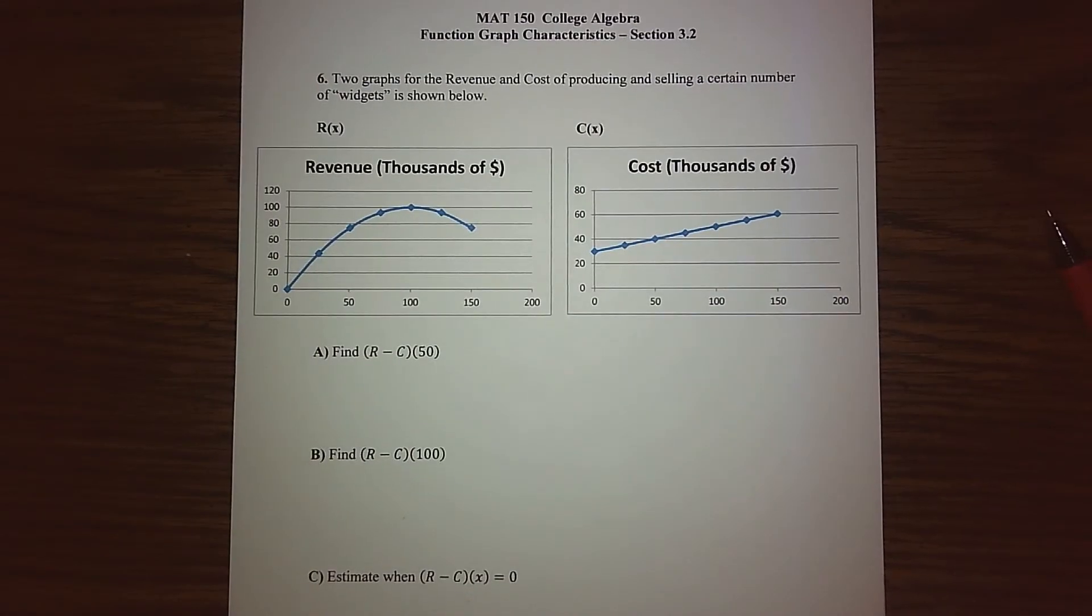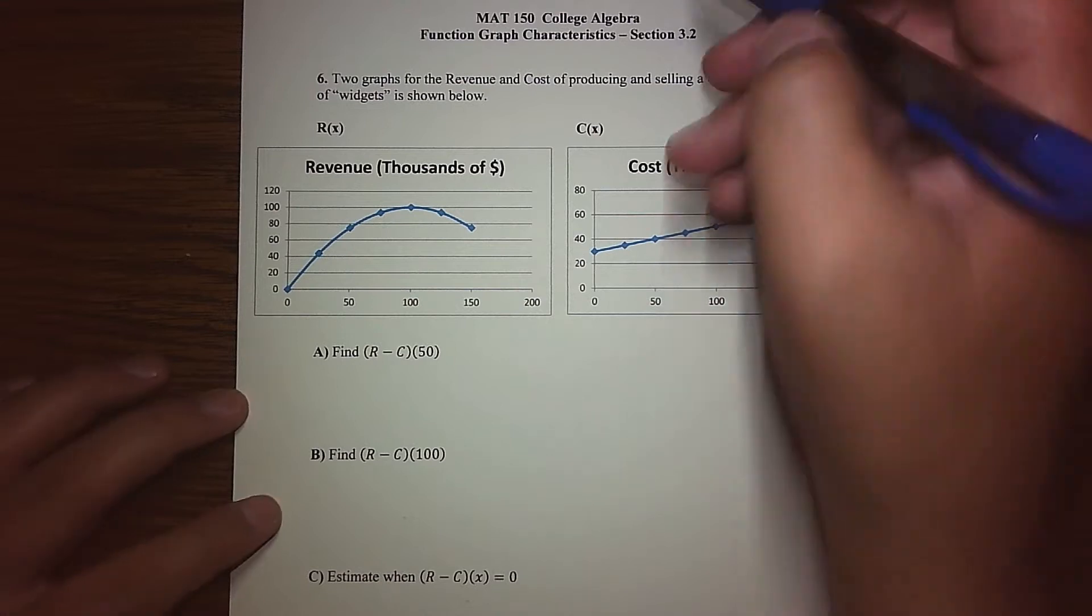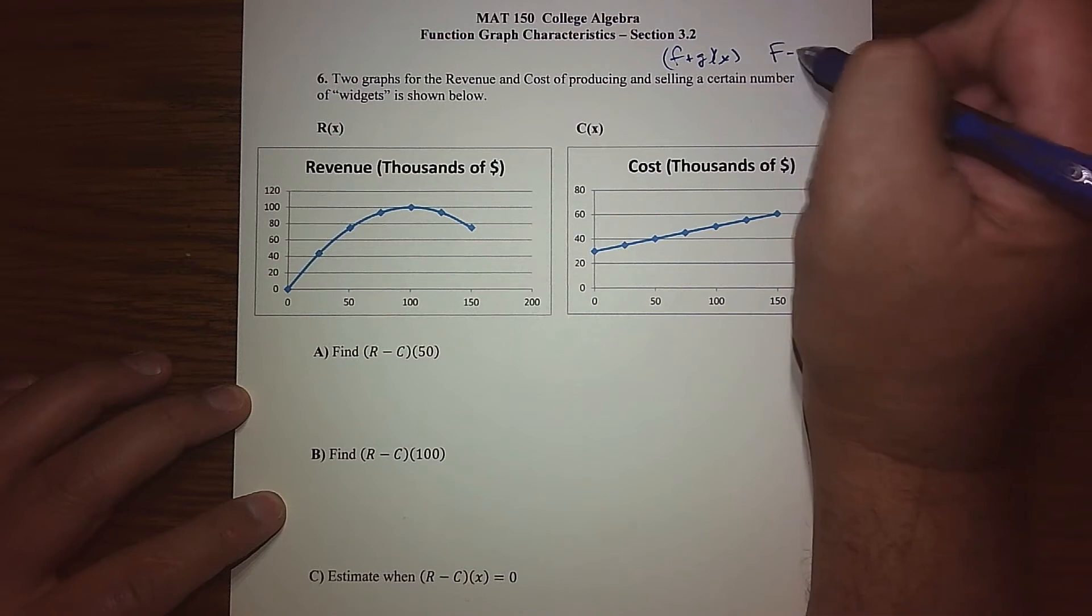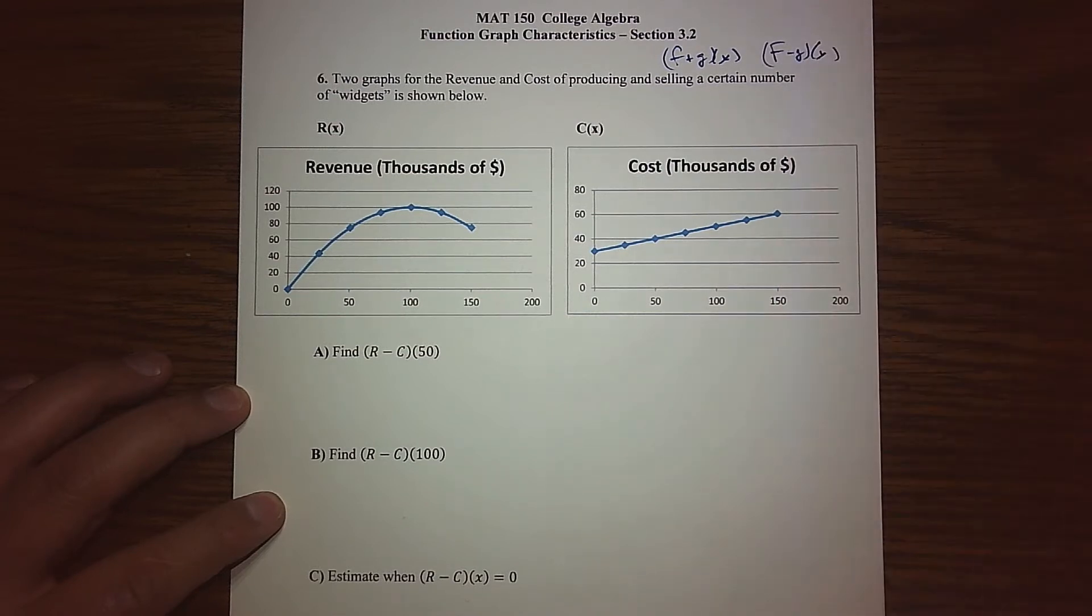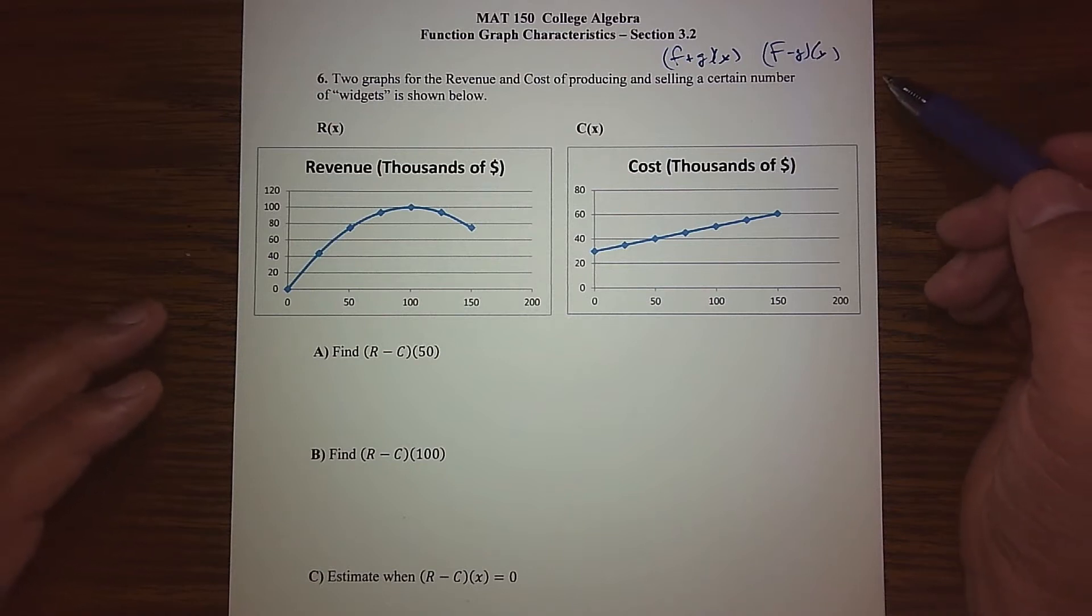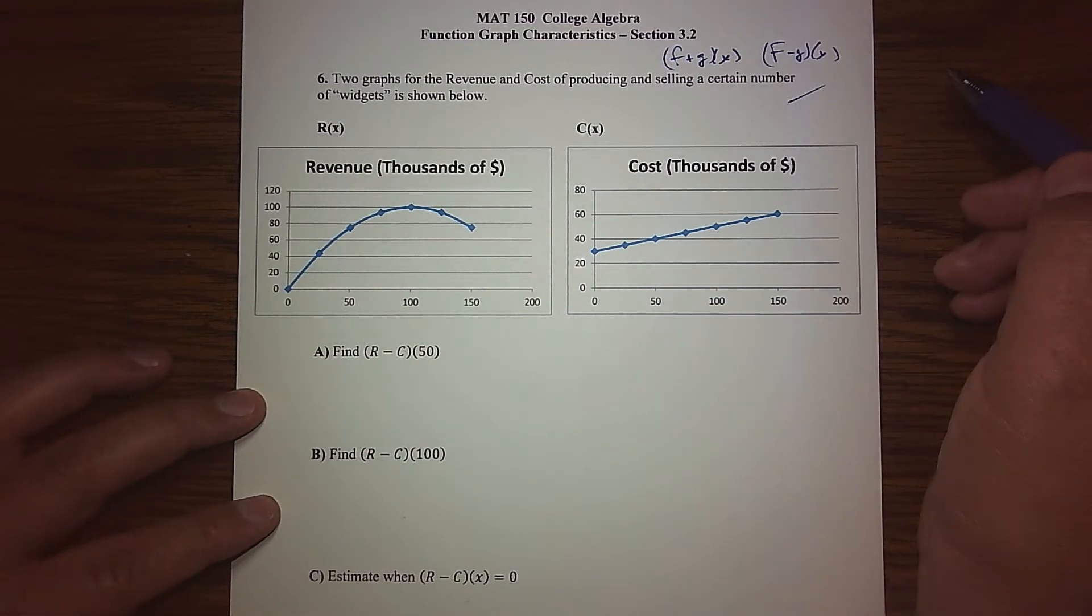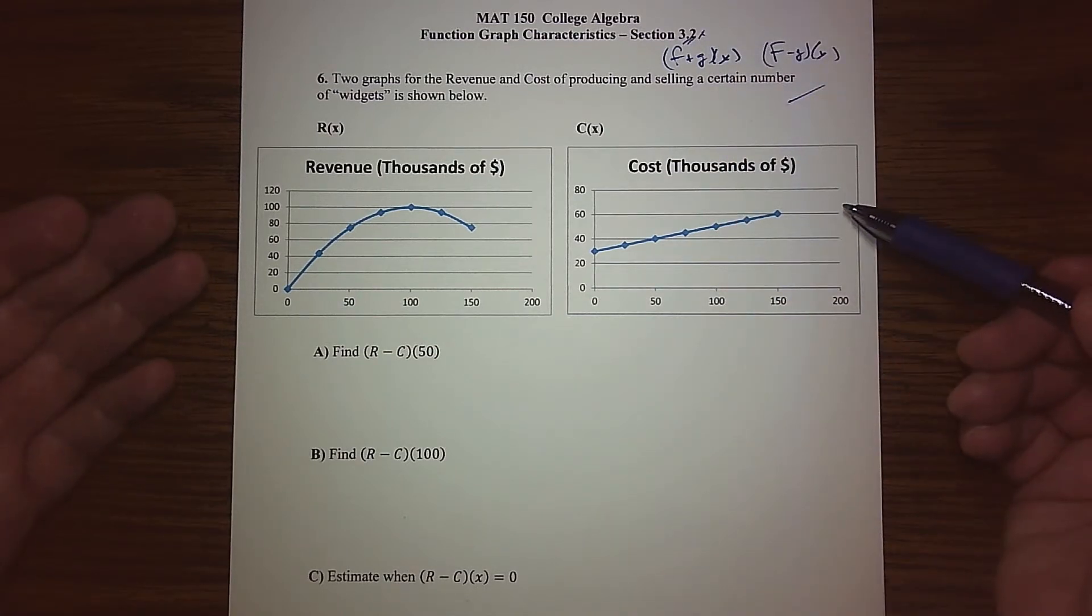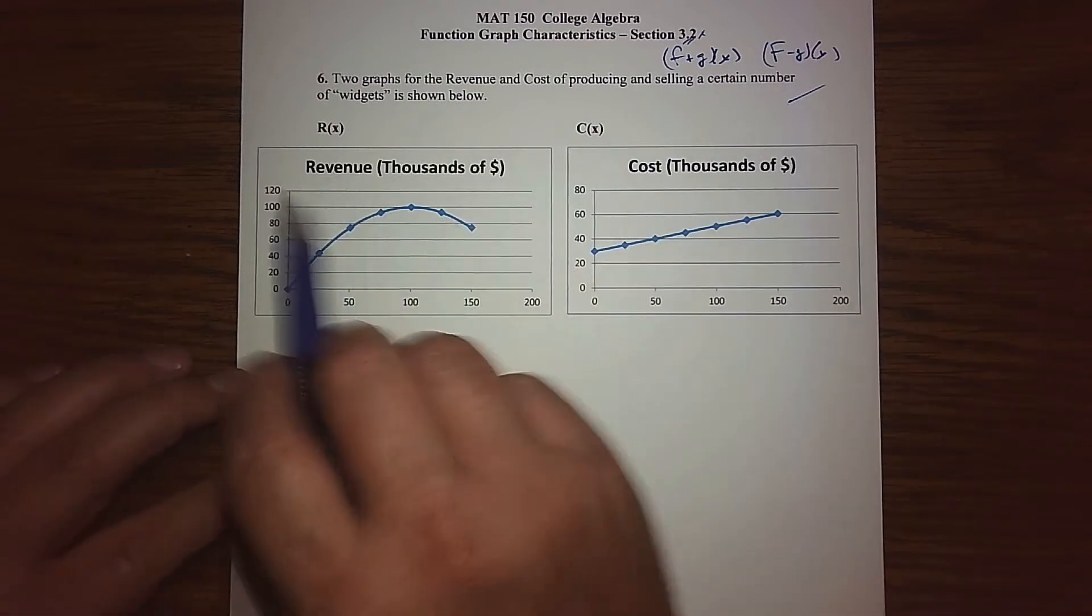The remaining item for section 3.2 is a revisit of the concept I playfully called function algebra - the idea when we took two functions and added them to build a new function, or subtracted them to build a new function. We were able to find its domain, find values, and we can actually do the same thing with the graph. This happens quite a bit because we normally don't have a nice neat function; what we have is data and pictures.